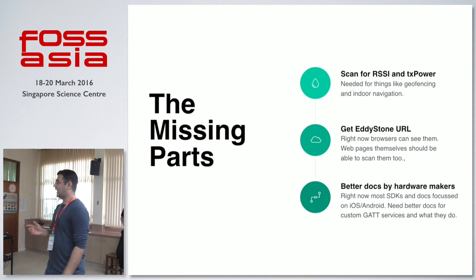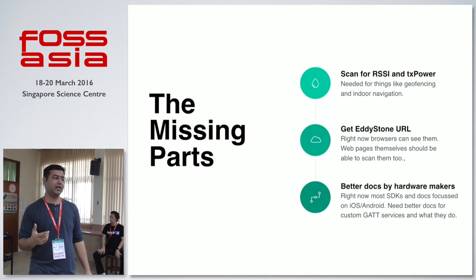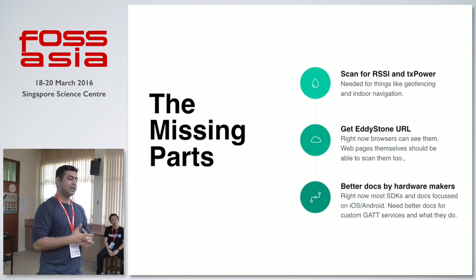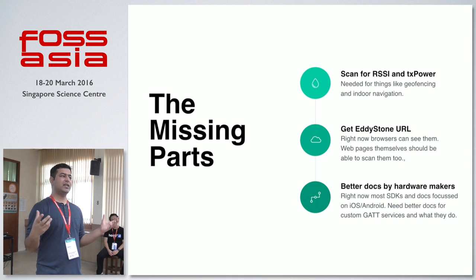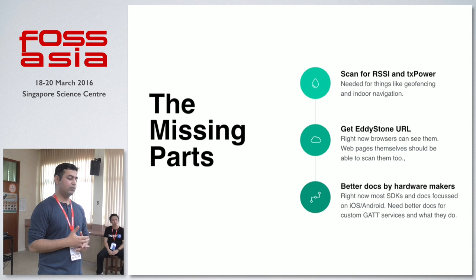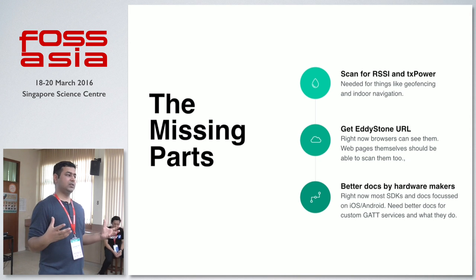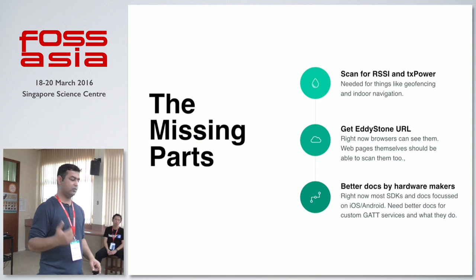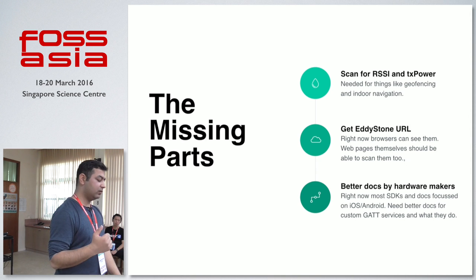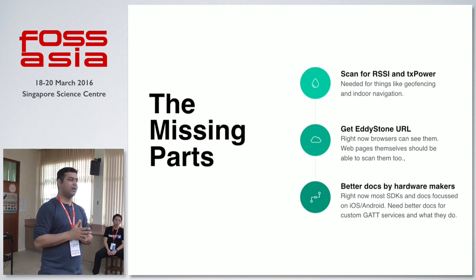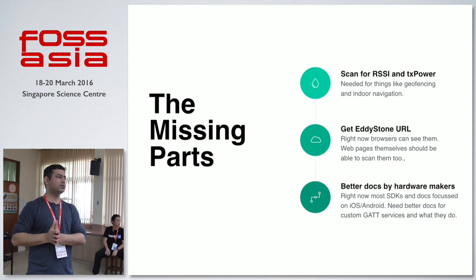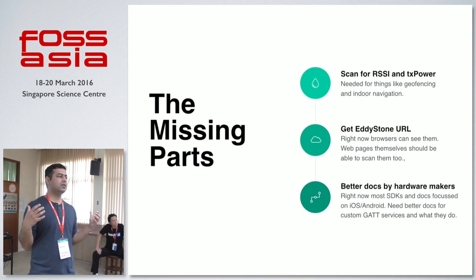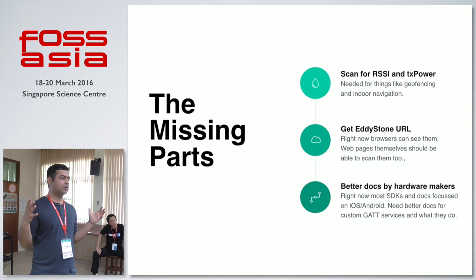So the missing parts we have right now with the Web Bluetooth API are: first, scanning for RSSI and TX power levels, but that will come. Second, right now browsers can detect Eddystone URLs — that work has been done — but the next step is actual web pages detecting beacons themselves, scanning for RSSI levels, and getting the RSSI as well as the Eddystone URL. That will be really interesting. But the most needed thing now that we have this technology is to ask hardware makers — instead of having proprietary APIs and native apps — to just expose their services using GATT, so that people like us can make web applications and progressive web apps.